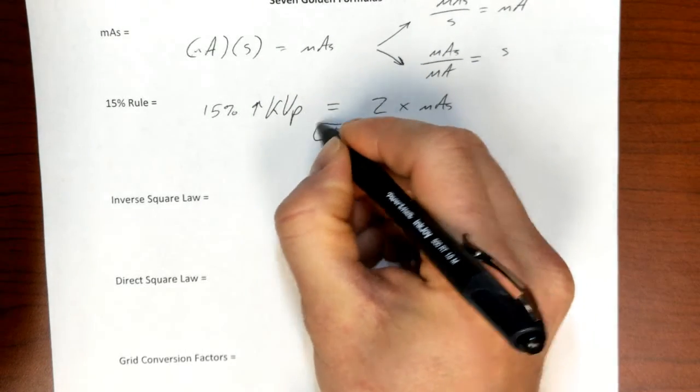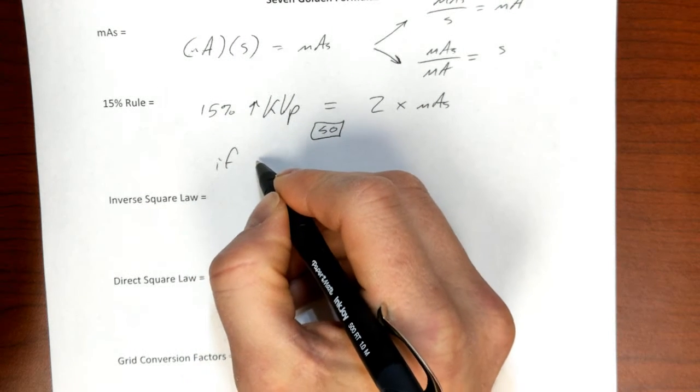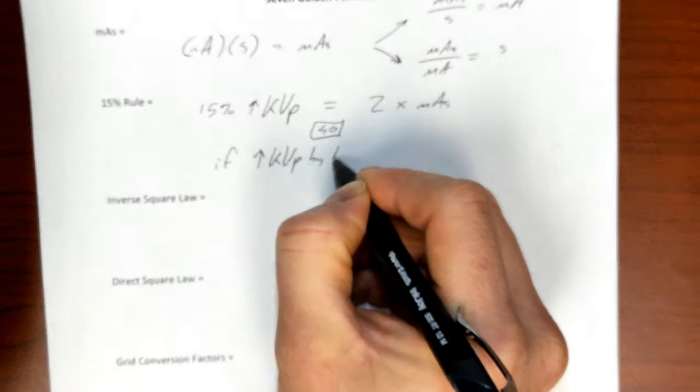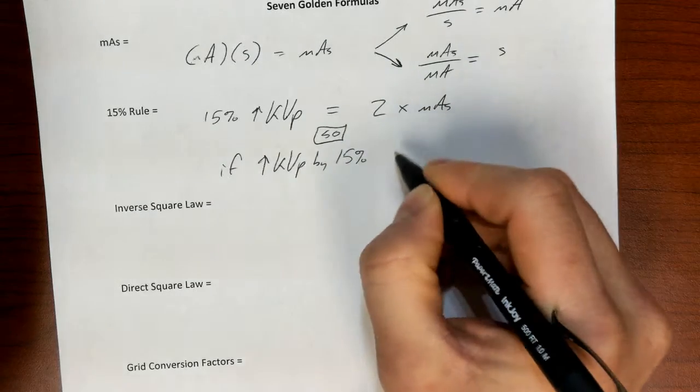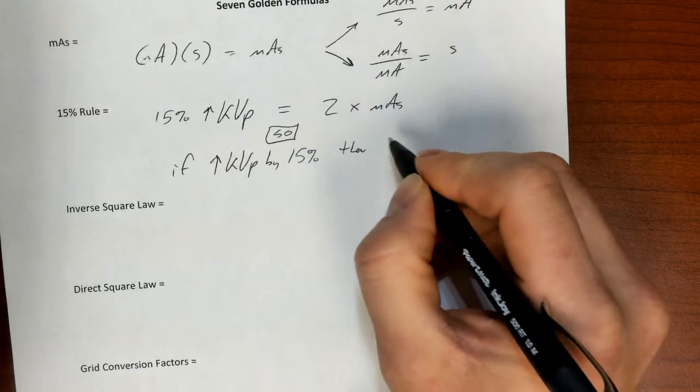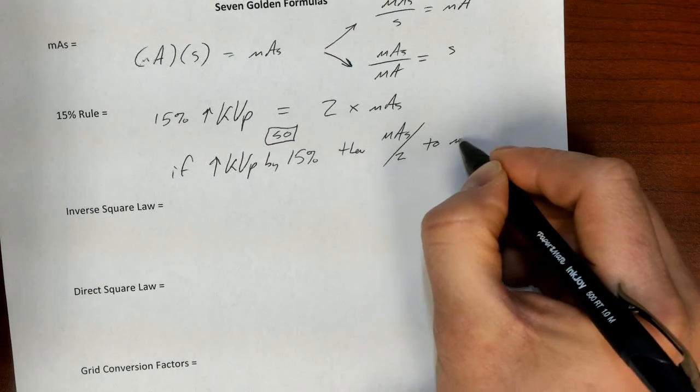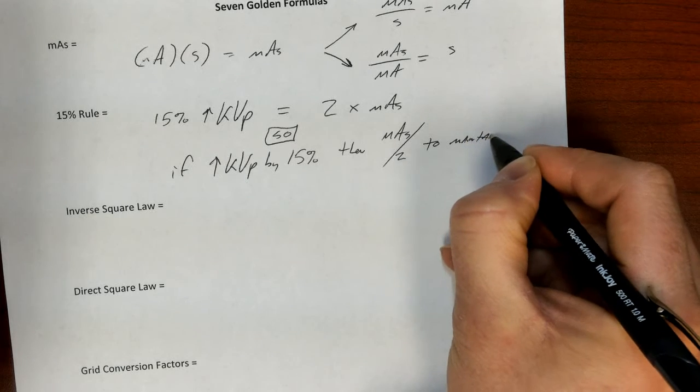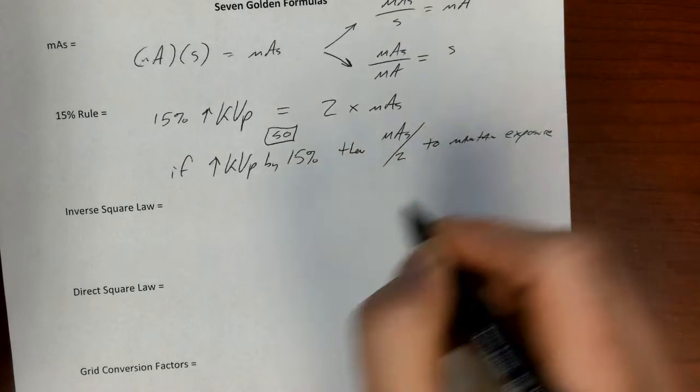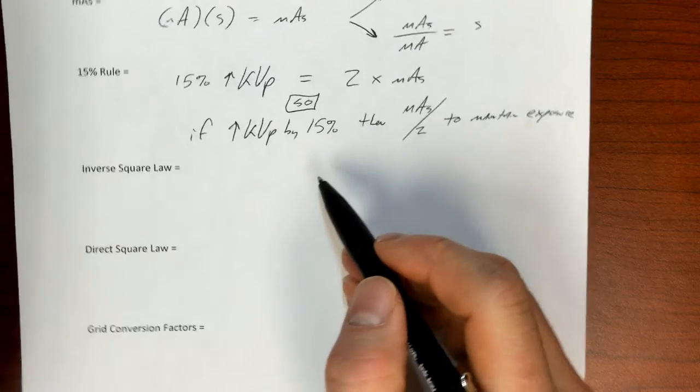So if this is true, and this is where a lot of students trip up, if this is true, then it's also true to say if we increase the KVP by 15%, then if we want to maintain the same exposure, we need to divide the mAs in half to maintain exposure. So just two different ways of thinking about basically the same thing, how significantly KVP changes exposure at the image receptor.